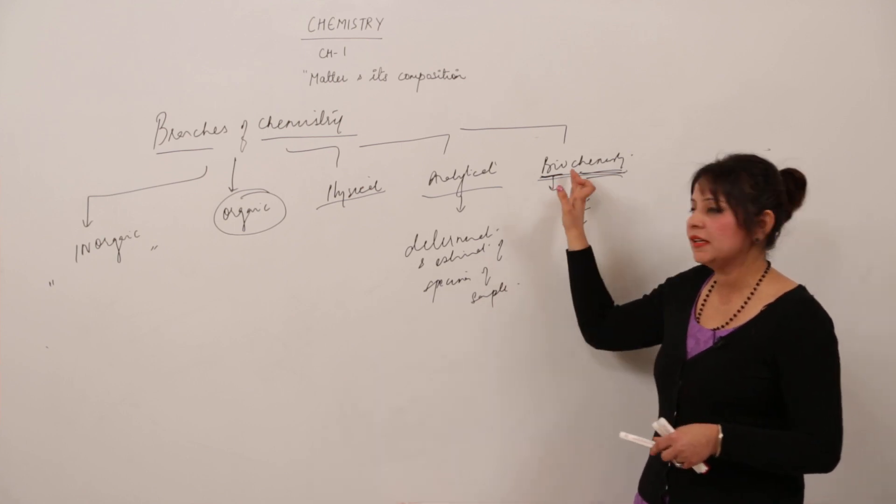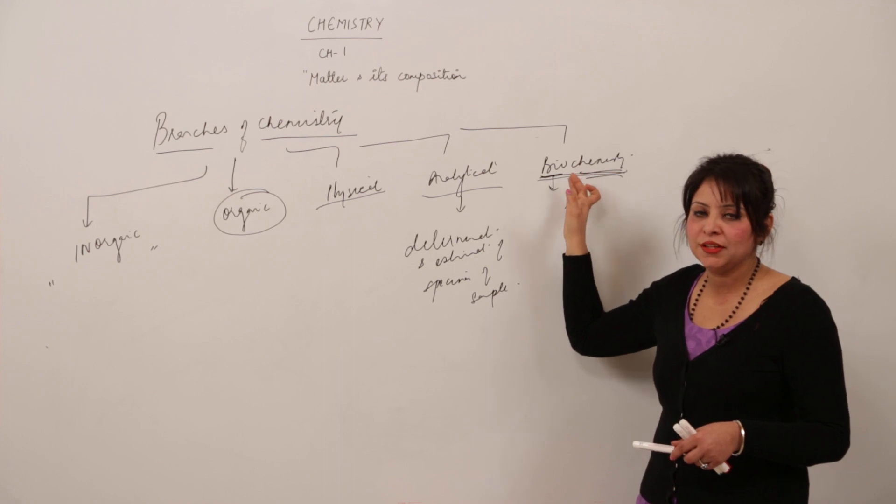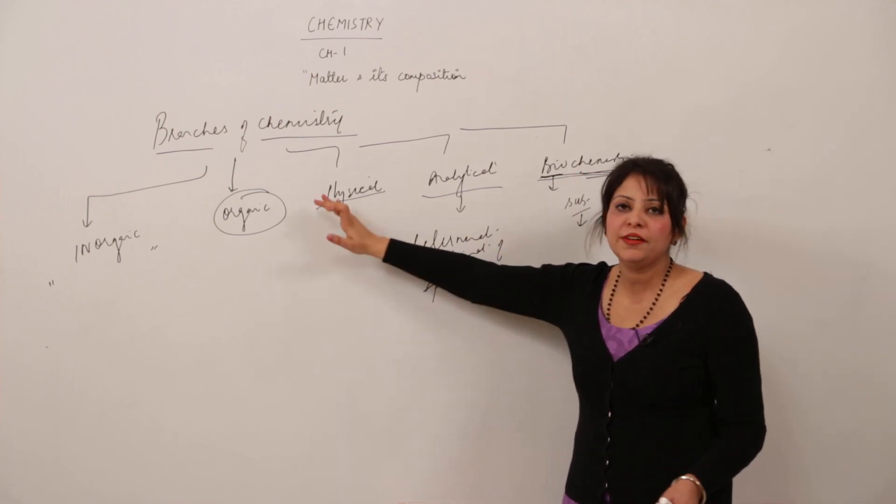So these are the five branches of chemistry.